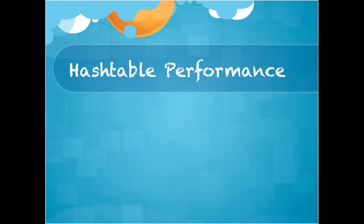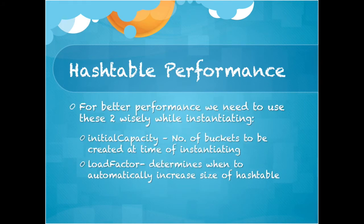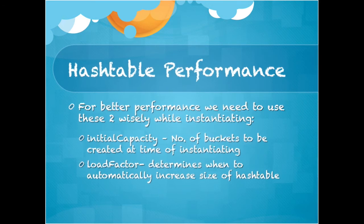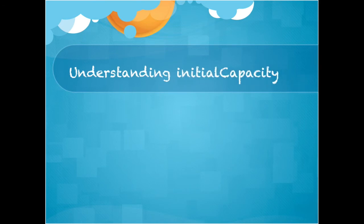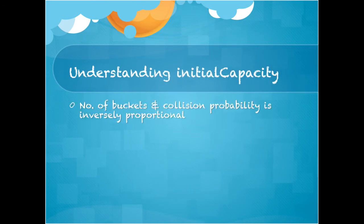Understanding the performance of a hash table. For better performance we need to use these two points wisely while instantiating: 1. Initial capacity — the number of buckets to be created at time of instantiating. 2. Load factor — determines when to automatically increase the size of the hash table. We have to understand that the number of buckets and collision probability are inversely proportional, so if we choose more bucket capacity then collision probability will be less. The default value is 11.